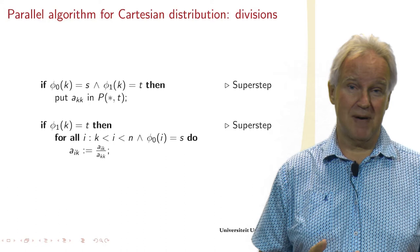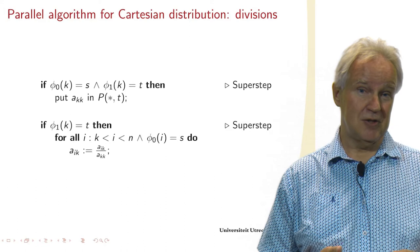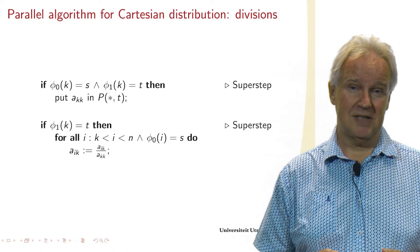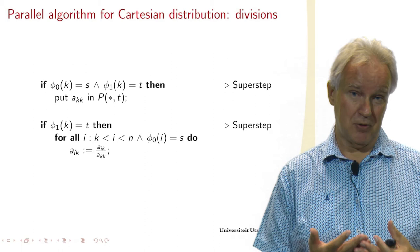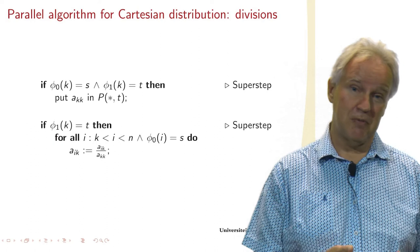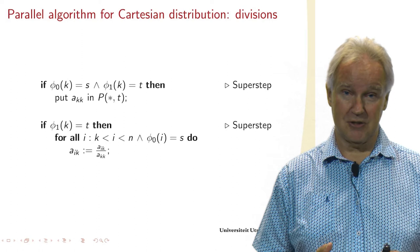Well, element AIK is in processor with the first coordinate phi_0(I) equals S, and the second coordinate must be phi_1(K) equals T. And I am processor S,T. That's the program text, as we have seen. We write in single program multiple data style. So we write the program text for a single processor, and that processor is processor S,T.